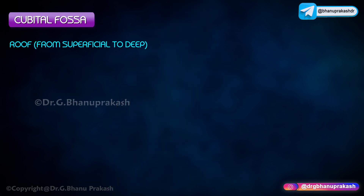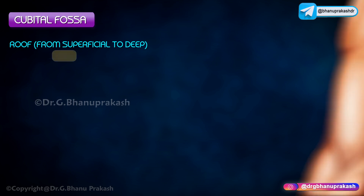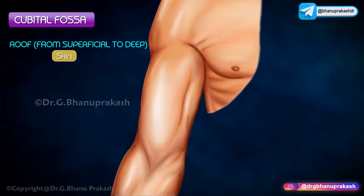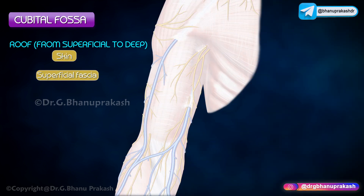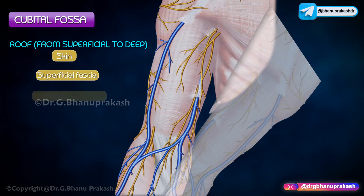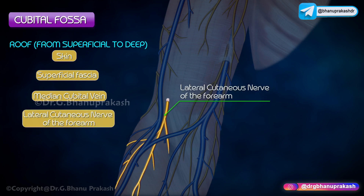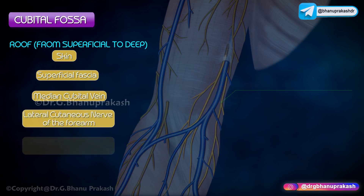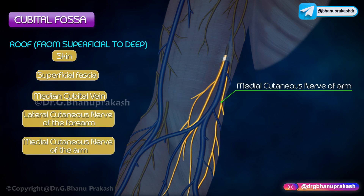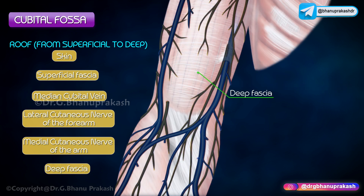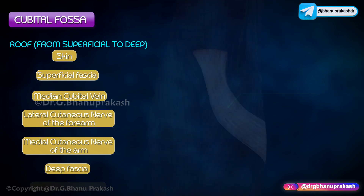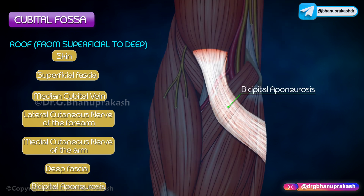Roof, from superficial to deep: skin, superficial fascia, median cubital vein, lateral cutaneous nerve of the forearm, medial cutaneous nerve of the arm, deep fascia and the bicipital aponeurosis.